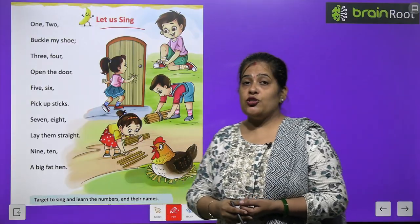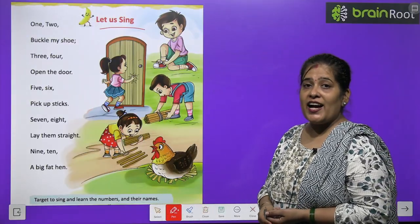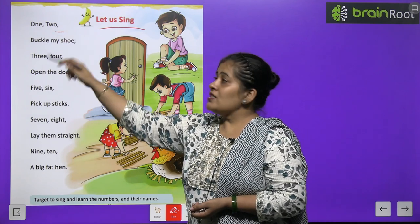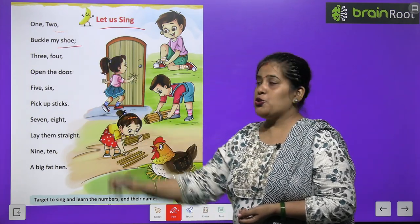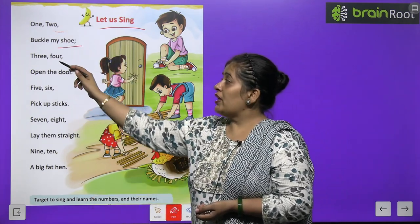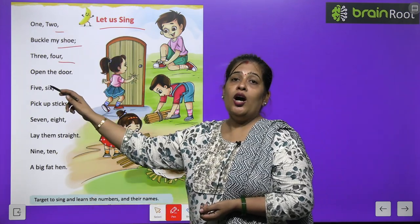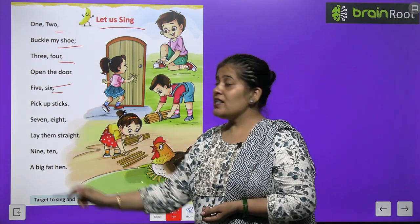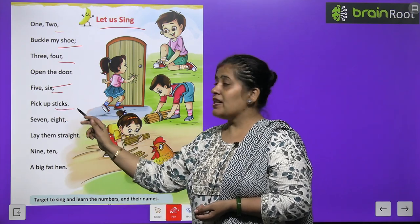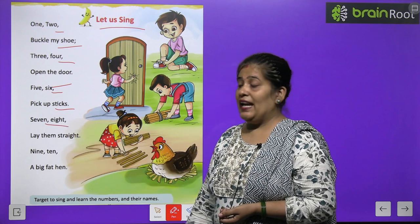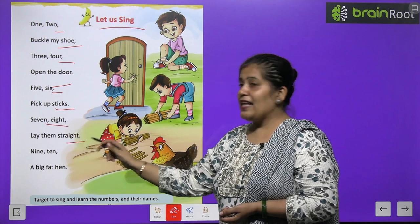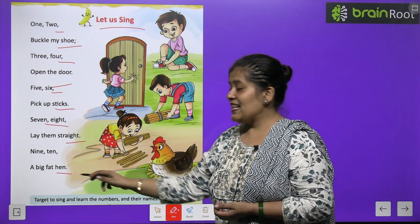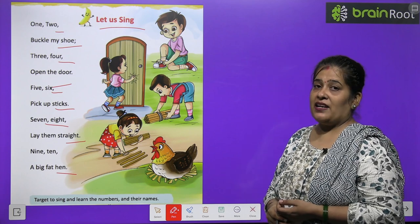Let us sing. Toh chaliyay kuch gaate hain. 1, 2, buckle my shoe. 3, 4, open the door. 5, 6, pick up the stick. 7, 8, lay them straight. 9, 10, a big fat hand.